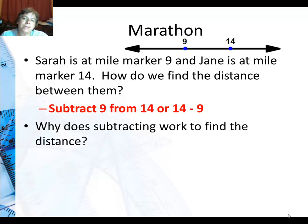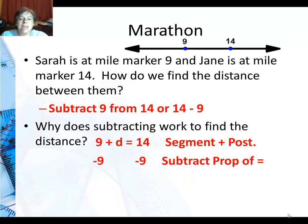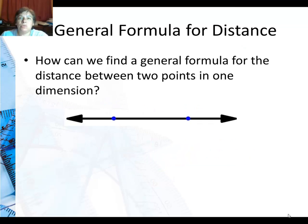So why does subtracting work to find the distance? Well I'm going to go back to the segment addition postulate which we already talked about. So if I write 9 plus the distance between them I will get 14. Then I can subtract 9 from both sides using the subtraction property of equality which means I can subtract the same thing from both sides. And I get the distance equals 14-9 which is what we were doing before.